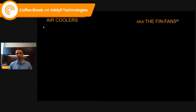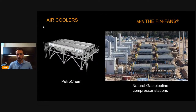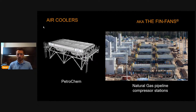FinFans, also known as air coolers, are found in petrochemical plants — lots of assets have them across various processes — but also in natural gas pipeline compressor stations. As you can see in the picture, there are eight banks of FinFans on that compressor station — another place where we can find a lot of them.